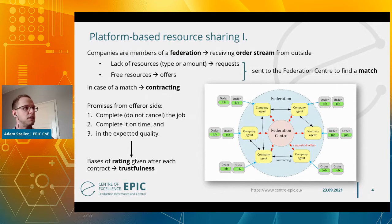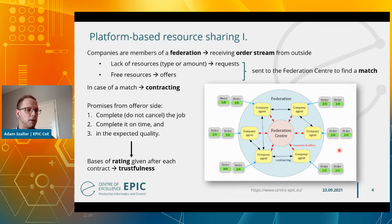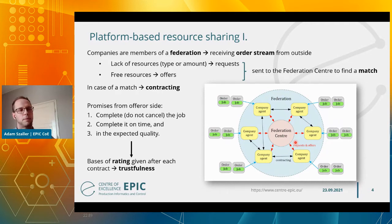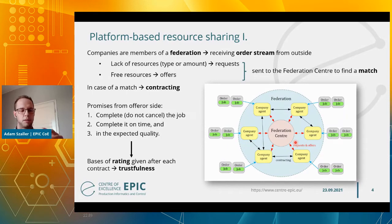In the platform-based resource sharing model, companies are members of a federation and receive an order stream from outside. In case of having a lack of resources, they send requests to the federation center or platform, and when having free resources, they can send offers to this central platform. The role of the federation center is to match requests with offers, then send different possibilities to the requester agent. After the requester chooses the best solution, a contract is made between the offeror and the requester company.